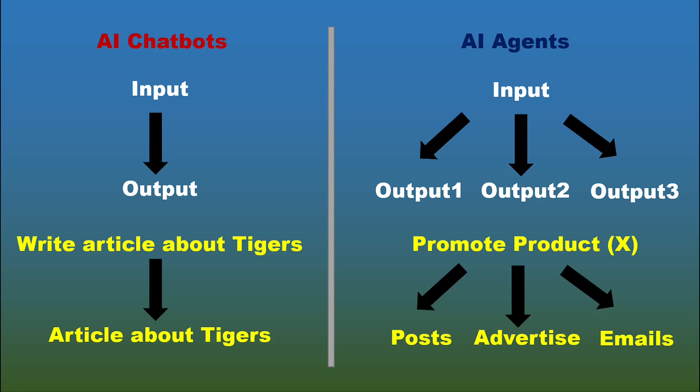Generally speaking, we can say that chatbots are designed to perform one-to-one tasks, one output per one input, while AI agents can generate multiple outputs from a single input.